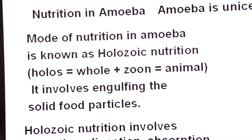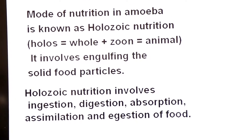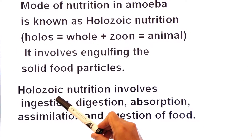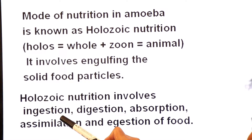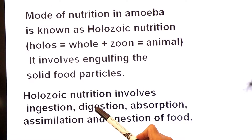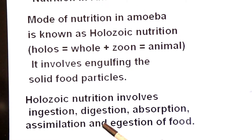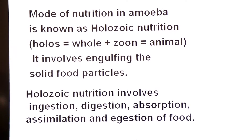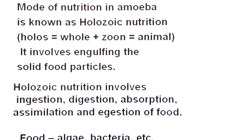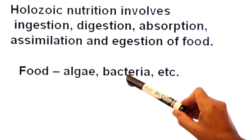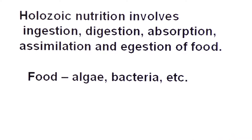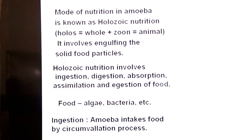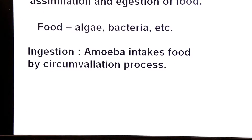Before discussing the food of amoeba, let's see how many steps are involved in holozoic nutrition. Holozoic nutrition involves five steps: ingestion, digestion, absorption, assimilation, and egestion of food. The food of amoeba is algae, bacteria, and other microscopic organisms.